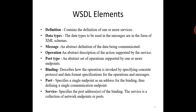5. Port Type — it is a set of operations mapped to one or more endpoints, defining the collection of operations for a binding. 6. Binding — it is a concrete protocol and data formats for operations and messages defined for a particular port type. 7. Port — it is a combination of binding and network address, providing the target address of the service communication. 8. Service — it specifies the port address of the binding. The service is a collection of network endpoints or ports.